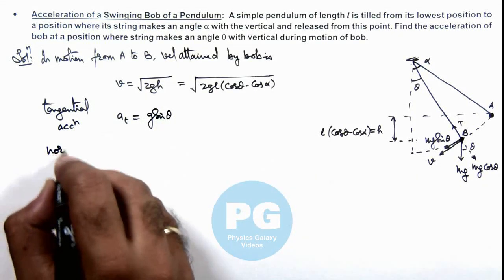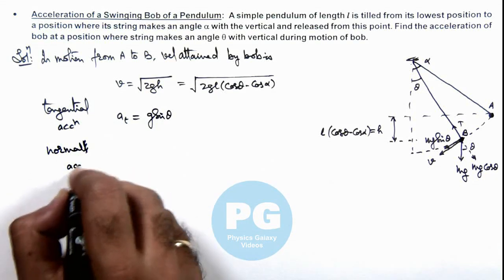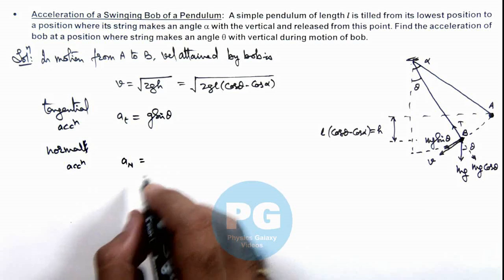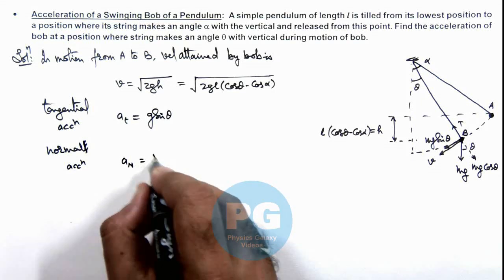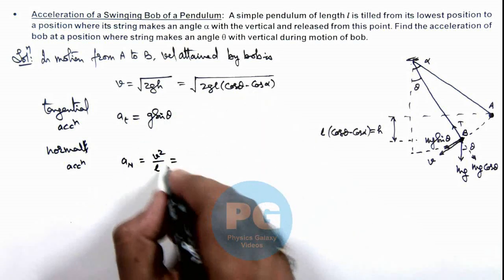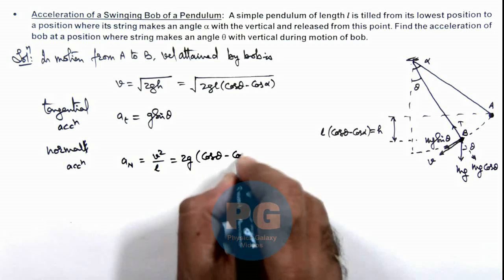And if we calculate the normal acceleration of the bob, then this normal acceleration can be given as v²/l, which is equal to - if we use this v - this is 2g multiplied by (cos theta - cos alpha).